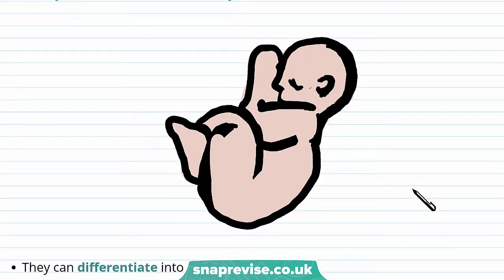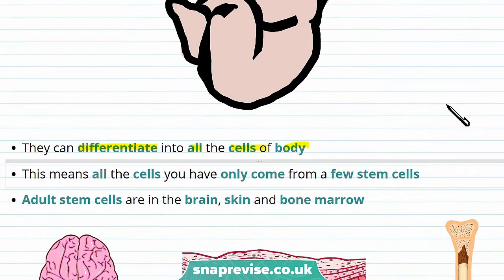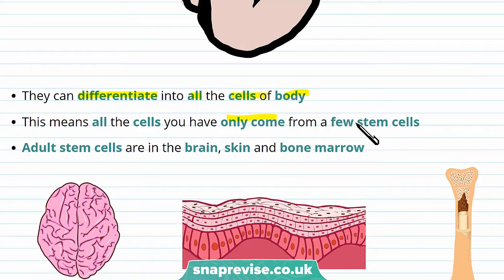These cells are really important as they can differentiate into all the cells of the body. This means that all the cells of your body only come from a few stem cells. These stem cells divide and differentiate again and again until they form a whole organism.